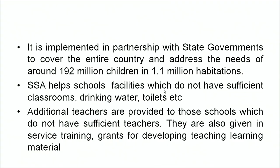The Right to Education bill is implemented in partnership with state governments to cover the entire country, addressing the needs of around 192 million children in 1.1 million habitations. Sarva Shiksha Abhiyan helps schools that do not have sufficient classrooms, drinking water, toilets, and other facilities. One of the most important purposes of SSA is to provide basic infrastructure for schools to maintain a minimum quality.